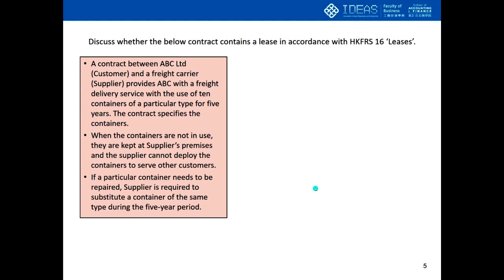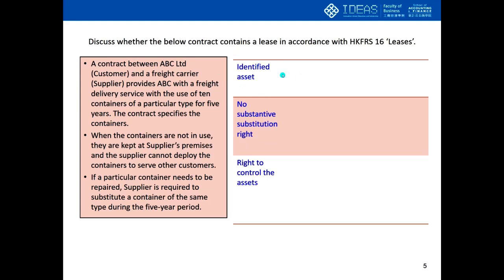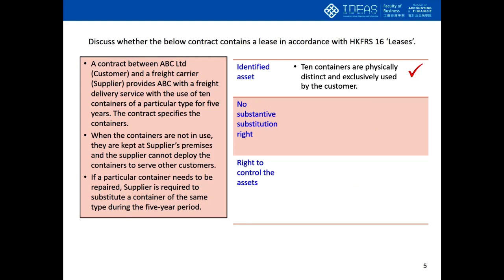We structure our answer using three factors. First, is there an identified asset? Second, are there substantive substitution rights — or can we say they do not exist? Third, can the customer control the asset? Going through the contract: from point one, ten containers are specified in the contract — they are physically distinct and exclusively used by the customer, so we have a tick for identified asset. On substitution rights, they exist, but we need to assess whether they are substantive.